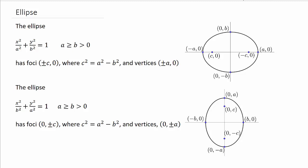Let's look at finding equations of ellipses. I'll have several videos, check them all out. The ellipse is in the form x squared over a squared plus y squared over b squared equals 1, where a is greater than or equal to b, which is greater than 0. Foci are at plus or minus c, 0, and c squared equals a squared minus b squared, and vertices are at plus or minus a, 0.